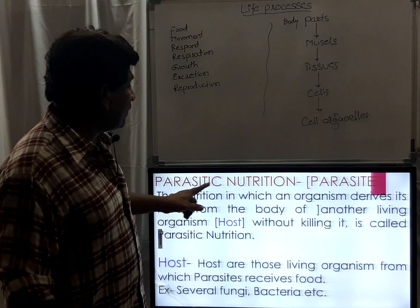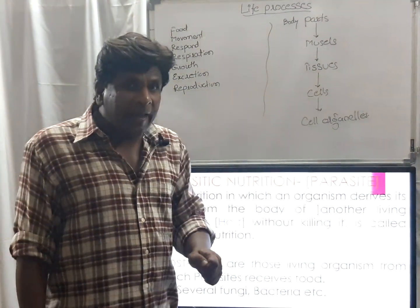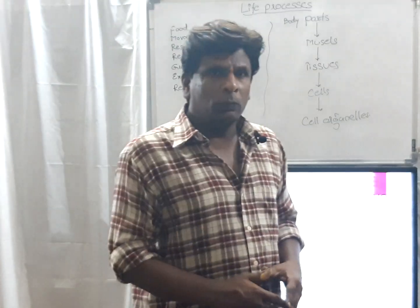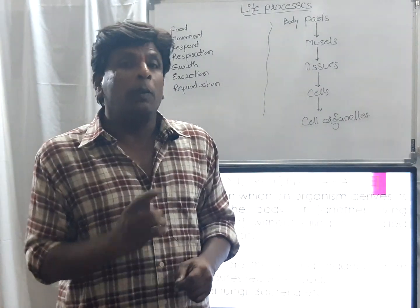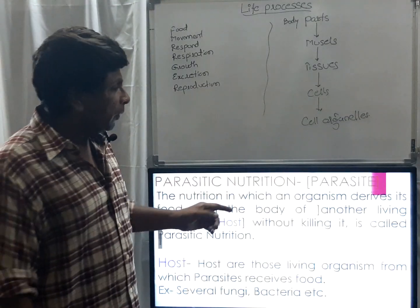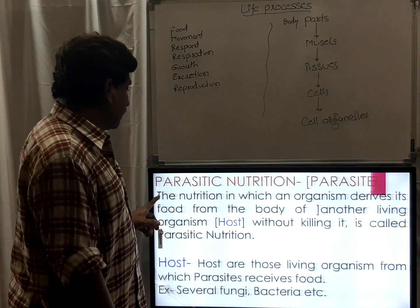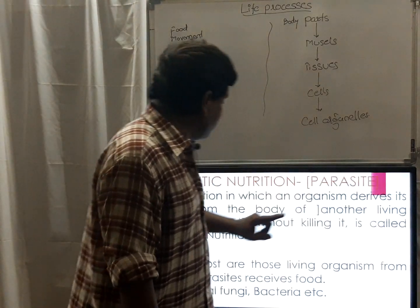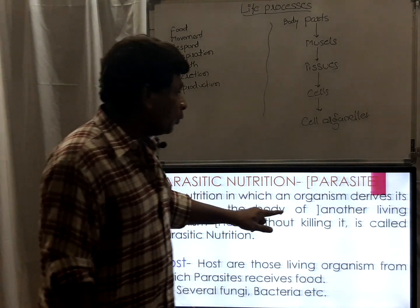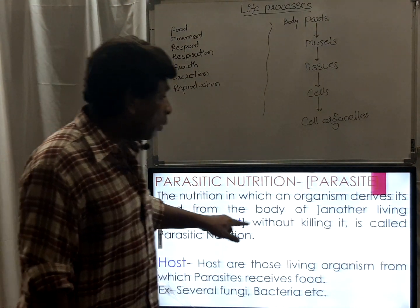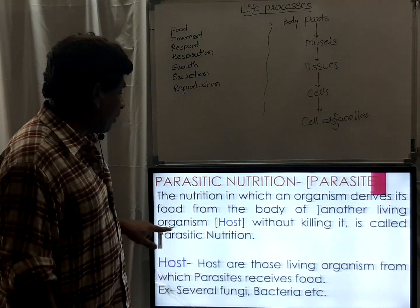Next we come to parasitic nutrition. Organisms having a parasitic mode of nutrition are called parasites. The definition of parasitic nutrition: the nutrition in which an organism derives its food from the body of another living organism, called the host, without killing it, is called parasitic nutrition.